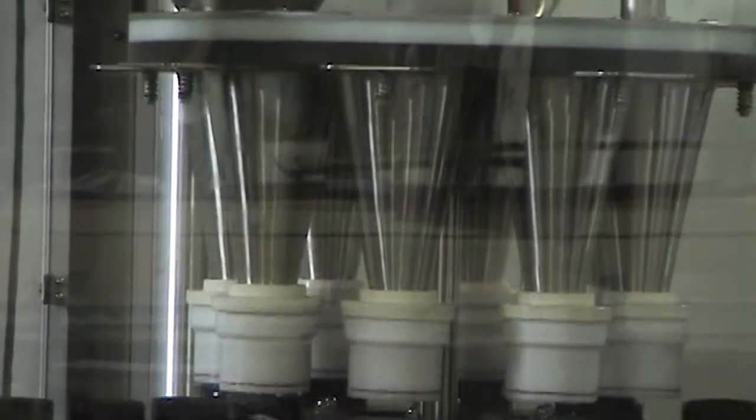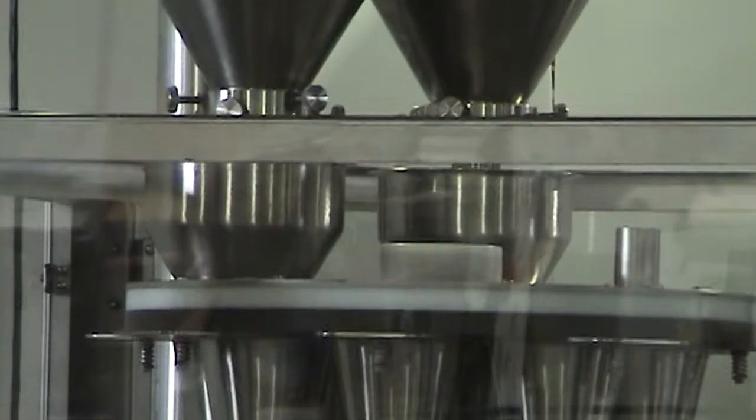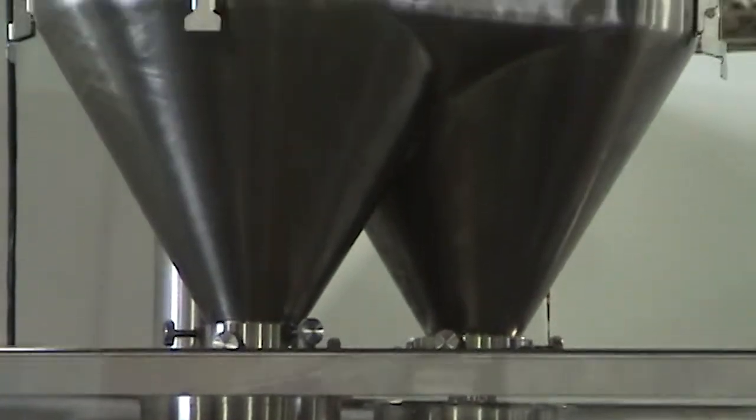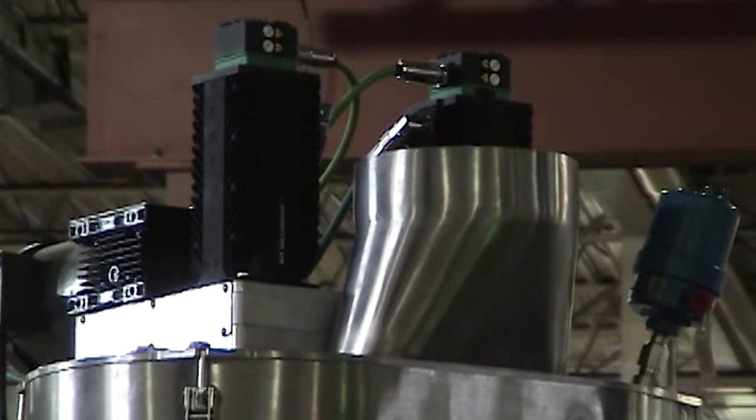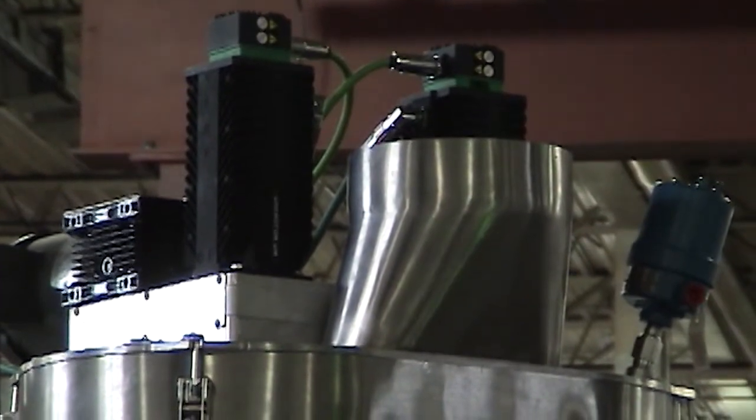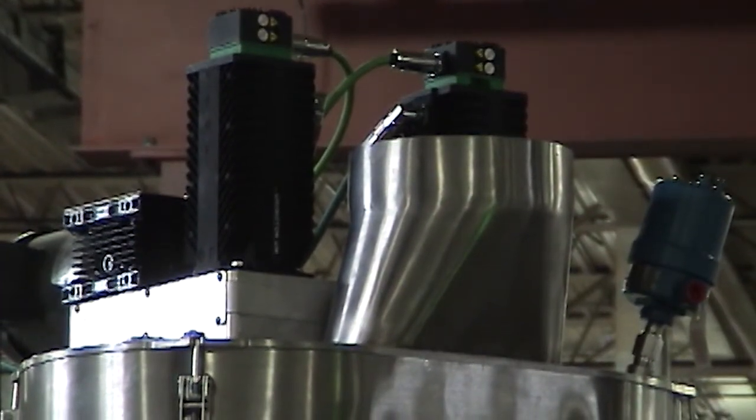Nalbach's servo driven auger fillers with touch screen control incorporate PLC controlled brushless direct drive servo motor systems, providing superior fill accuracy and reliability while dramatically reducing mechanical failures and downtime by eliminating most moving parts.